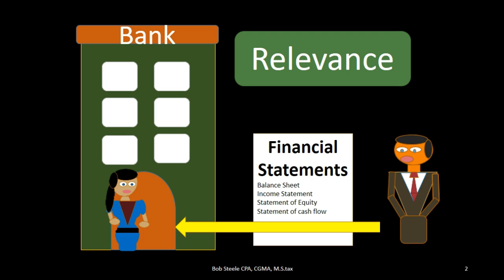External users like creditors, like investors, like the IRS. That doesn't mean that internal users don't have the same objectives, but internal users have more information and external users are more reliant on solely the financial statements for the information they need. Therefore, the financial statements are really geared towards those external users.